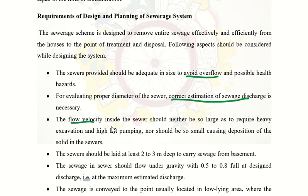The sewage will mainly have some solids. As always with a pipeline, there can be deposition. This deposition should not happen. Unlike a water supply line which can run on the surface, a sewer line should be 2 to 3 meters deep. Sewage collection from the basement of a building should also be possible.